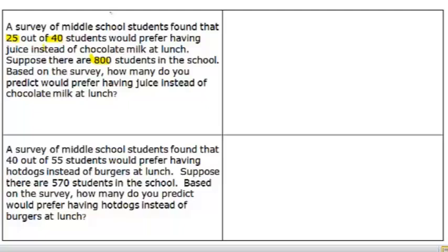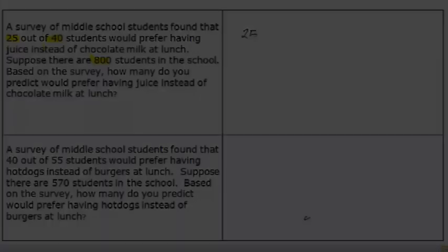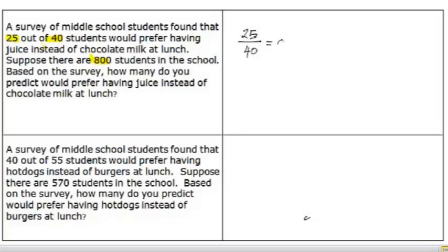So first, what you do is, you have to find the ratio. In this case, 25 divided by 40 gives you 0.625. You multiply it by the number of students in the school and that gives you 500.